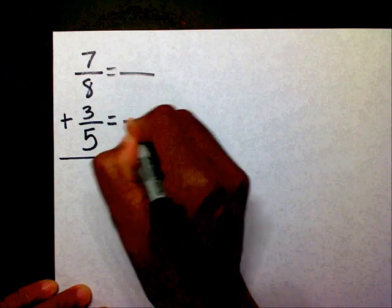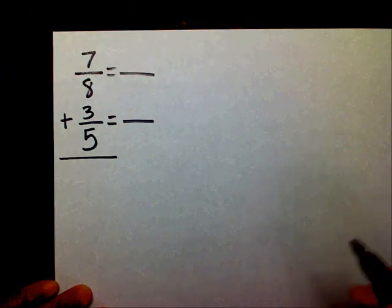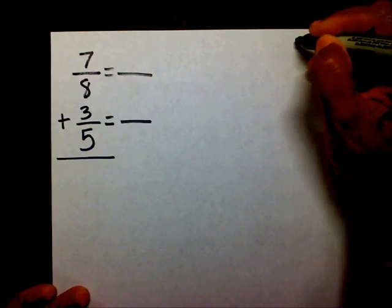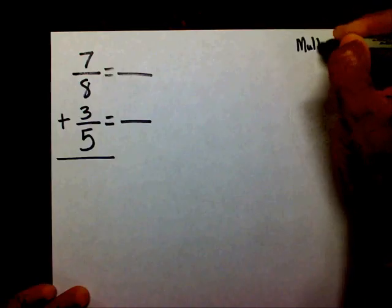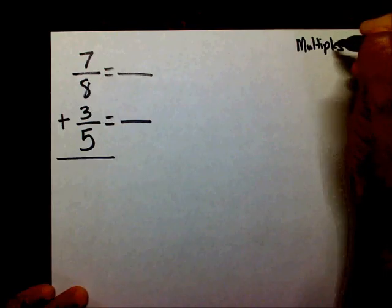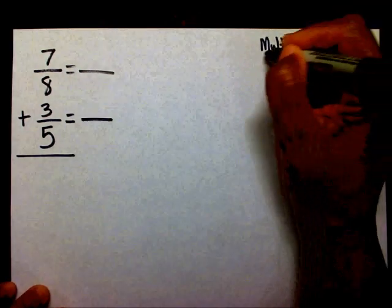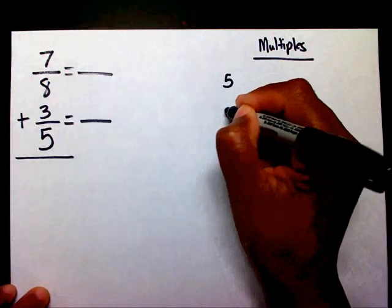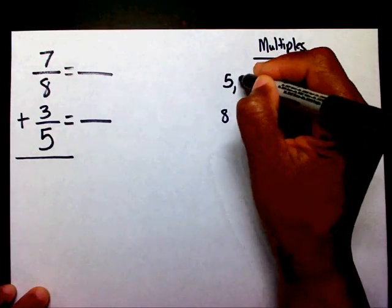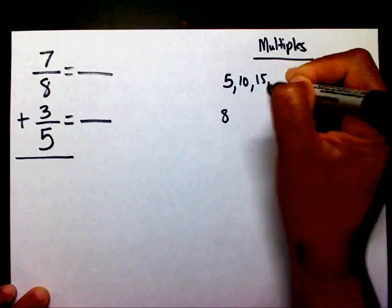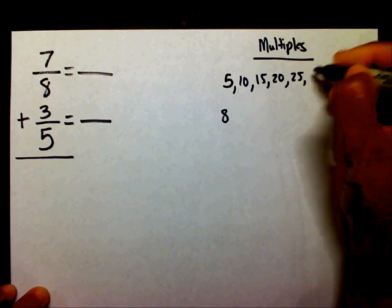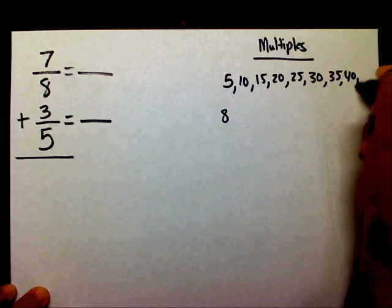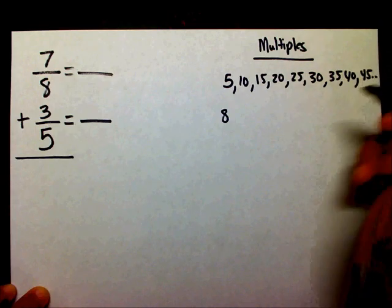I need to get a new denominator. Whenever you find your new denominator, you want to think about your multiples. I'm going to list my multiples of five and my multiples of eight. So I have five, ten, fifteen, twenty, twenty-five, thirty, thirty-five, forty, forty-five, and so forth.